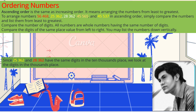In ordering numbers, we have two terms: ascending and increasing order — they have the same meaning. Ascending or increasing order means arranging the numbers from least to greatest. To arrange 56,468; 25,362; 28,362; 45,565; and 45,537 in ascending order, simply compare the numbers and list them from least to greatest. Compare the number of digits — all numbers have the same number of digits — then compare the digits of the same place value from left to right.